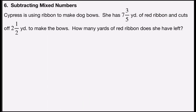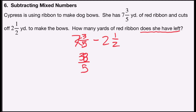Problem number six is subtracting mixed numbers. Cypress is using ribbon to make dog bows. She has seven and three-fifths yards of red ribbon and cuts off two and a half yards to make the bows. How many yards of red ribbon does she have left? 'Does she have left' indicates subtraction, so I have seven and three-fifths minus two and one-half yards. I'll rewrite these as fractions: five times seven is thirty-five, plus three is thirty-eight over five — so thirty-eight-fifths. Minus: two times two is four, plus one is five-halves. Since five and two are both prime numbers, I multiply them together — five times two is ten — for my least common denominator.